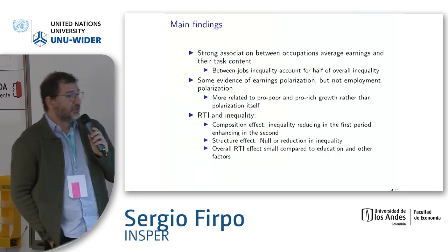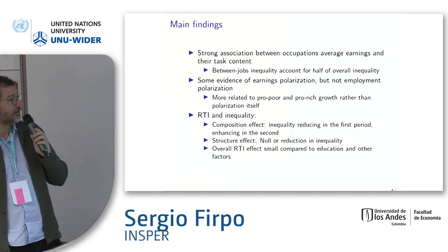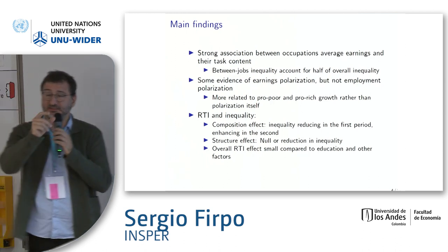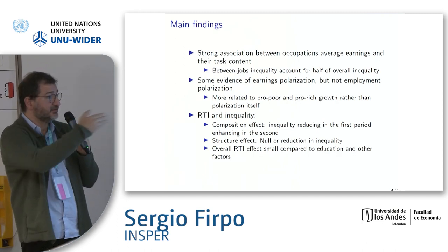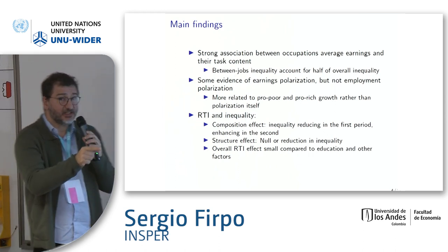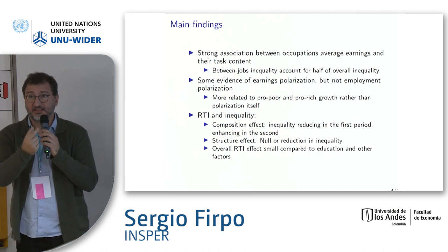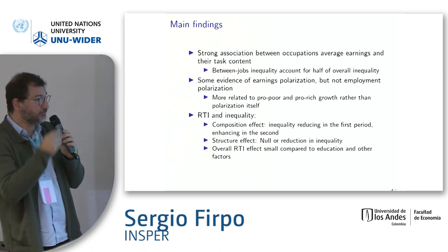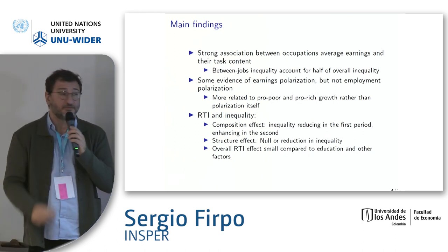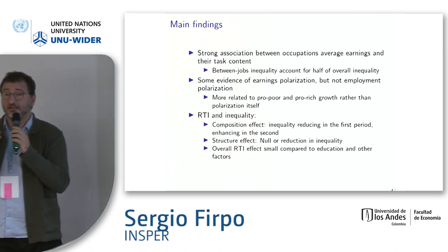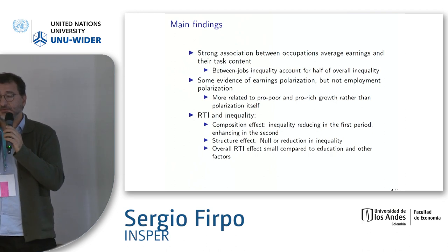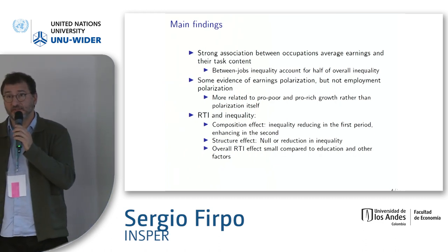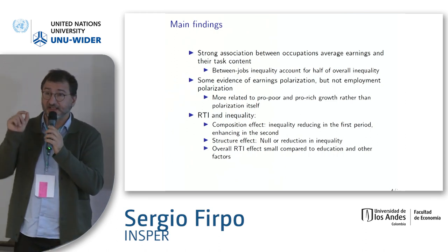Here is a summary of our main findings. When you look at occupations using the RTI — routine task intensity — measure, there is a strong negative correlation between average earnings in each occupation and routine task intensity: the more intense in routine tasks, the smaller the average earnings. We also decompose total inequality into between and within occupations, and between-occupation inequality explains about half of inequality at any given point in time in Brazil.